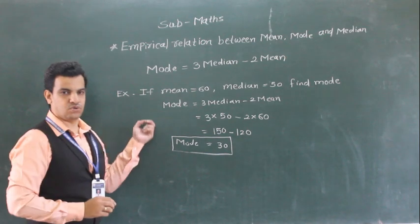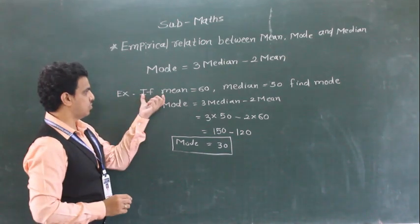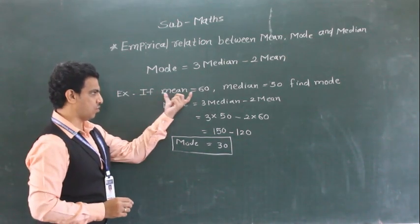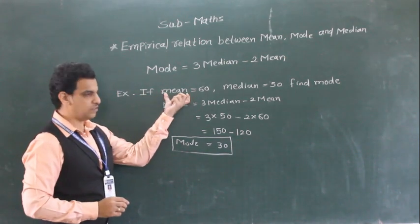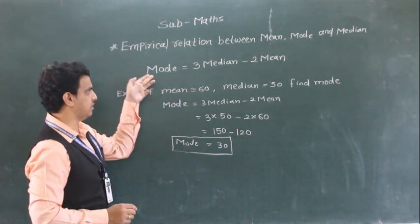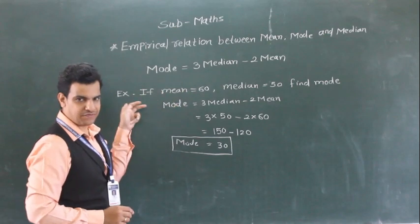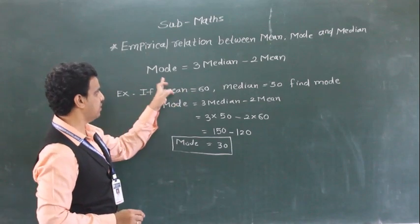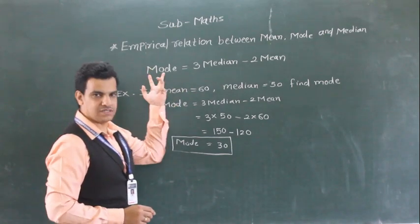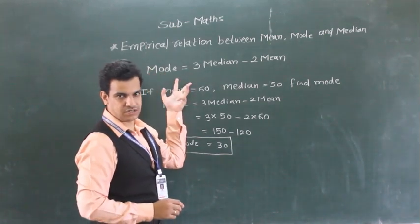So if two quantities are given, we can find the third quantity by using this empirical relation.